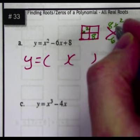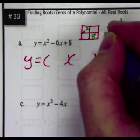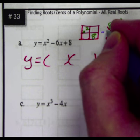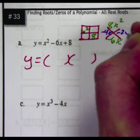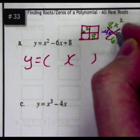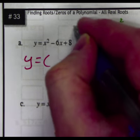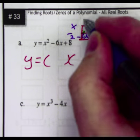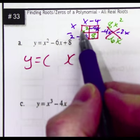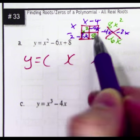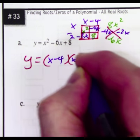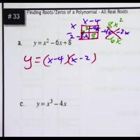So then I factor two numbers that multiply to 8 and add to negative 6. That would be negative 4 and negative 2. Negative times a negative makes a positive and they add to that number. I put them back over here and then I get x minus 2 going this way and x minus 4 going this way because x times x makes that.